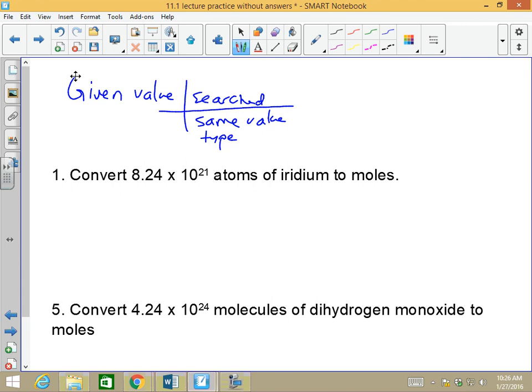On the first example, we have atoms given to me, 8.24 times 10 to the 21st atoms of iridium is given to me. That's given. At the bottom, I must have the same type of value, and if I'm given atoms, that's Avogadro's number.